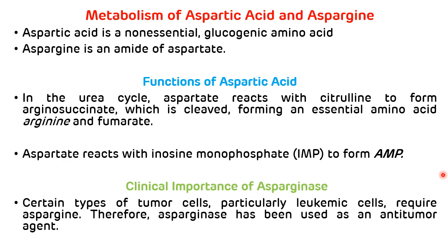Clinical importance of asparagine: certain types of tumor cells, particularly leukemic cells, require asparagine. Therefore, asparaginase has been used as an anti-tumor agent. Asparaginase converts asparagine into aspartate, so there will be no easy availability of asparagine for these tumor cells — particularly leukemic cells — and that is how asparaginase is useful in the treatment of leukemia.